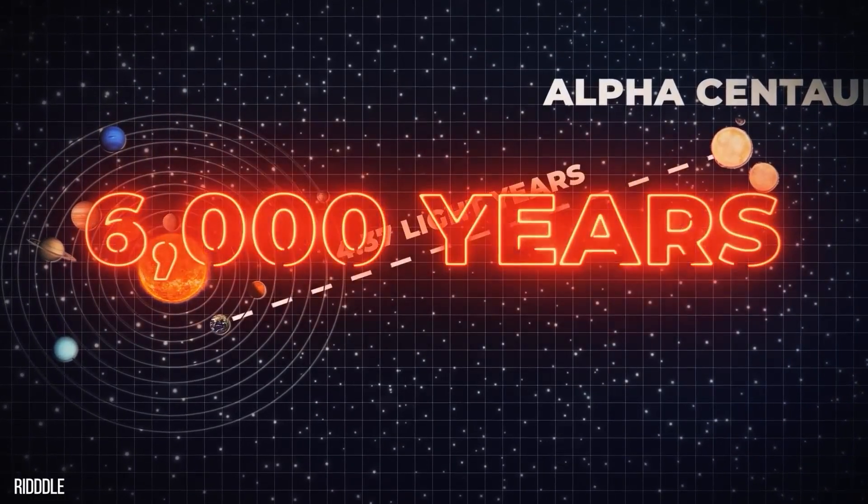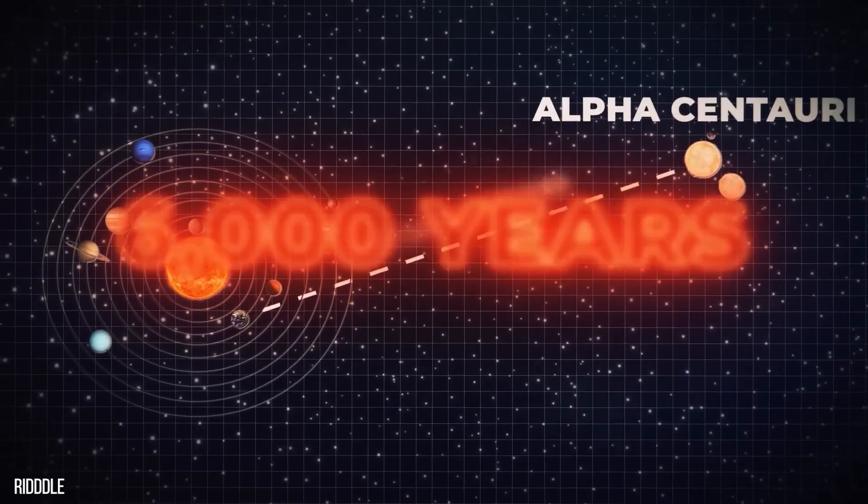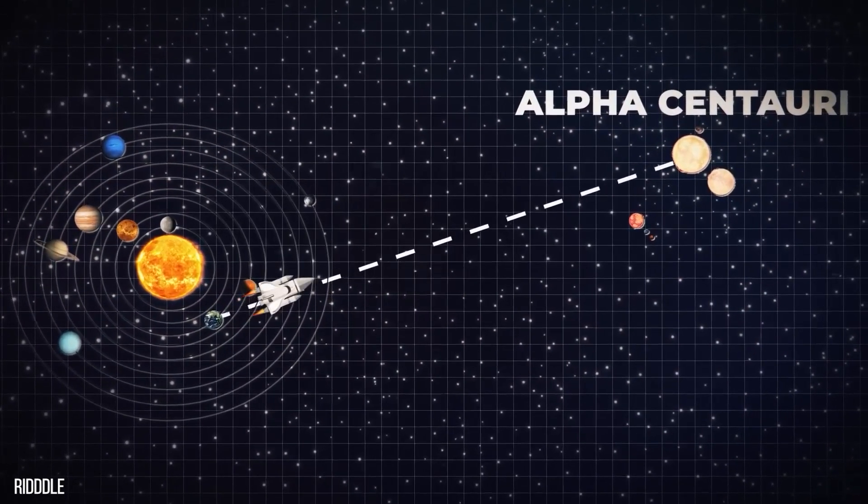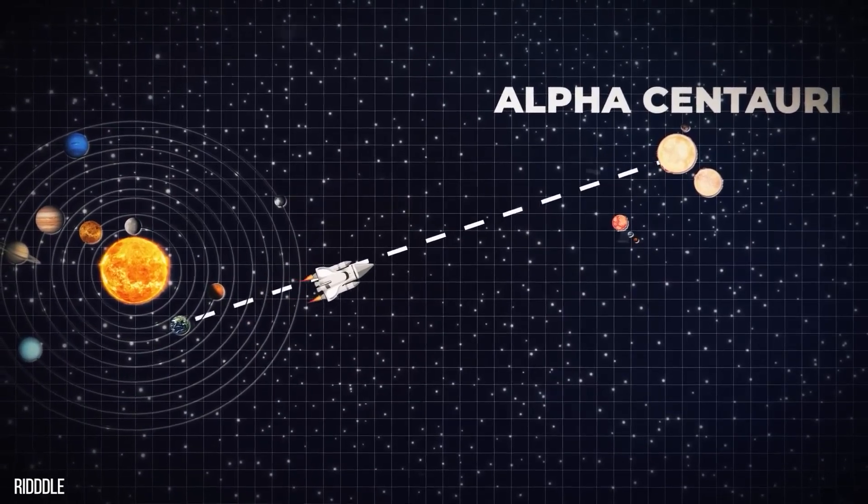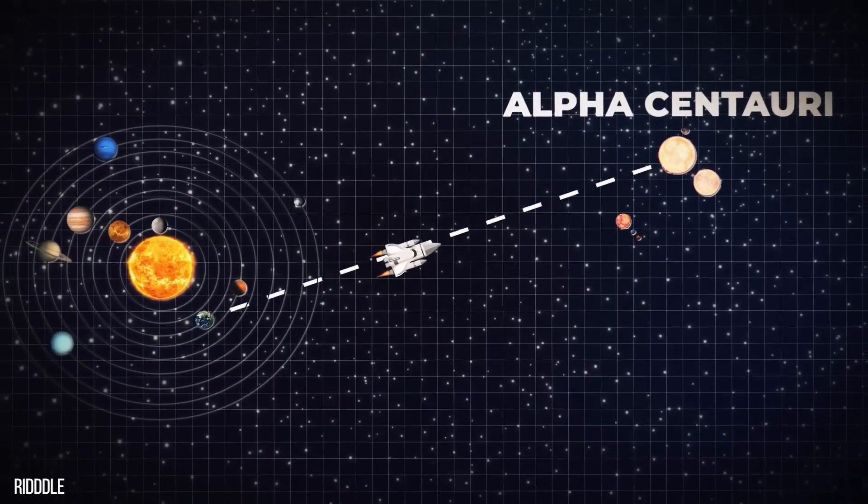By using the same traditional technology, it would take almost 6,000 years to reach Alpha Centauri. This necessitates the development of a newer mechanism for interstellar travel so that we can explore the vast expanse of space and planets it has.